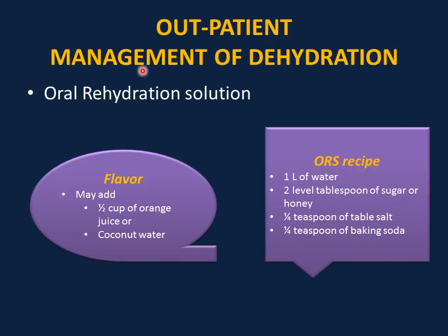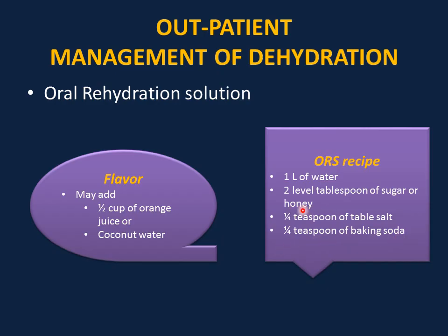For outpatient management of dehydration, it is not appropriate to use plain water, juices, sports drinks, Sprite, or 7-Up. The appropriate fluid is oral rehydration solution (ORS) or Pedialyte. ORS has the appropriate sodium-to-glucose ratio for maximum intestinal absorption. The recipe for ORS is 1 liter of water, 2 level tablespoons of sugar or honey, a quarter teaspoon of table salt, and a quarter teaspoon of baking soda. Note: do not use honey in children less than one year of age — use sugar instead. Adding flavor like orange juice or coconut water can make it more palatable.